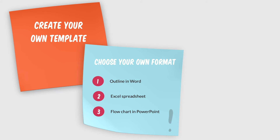When you've identified and revised the parts of the research plan that are most effective for you and suit your research project, reassemble them in a new template of your own creation. It can take many forms: an outline in Word, a spreadsheet, a decision tree, or flowchart. Just make it your own. The possibilities are endless, as long as the result is a tool that meets your needs and is one that you'll actually use.